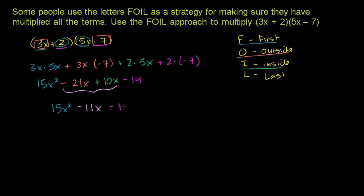So we just used FOIL. What I want to do is show you this is the same thing as applying the distributive property twice. So if we have (3x + 2)(5x - 7).